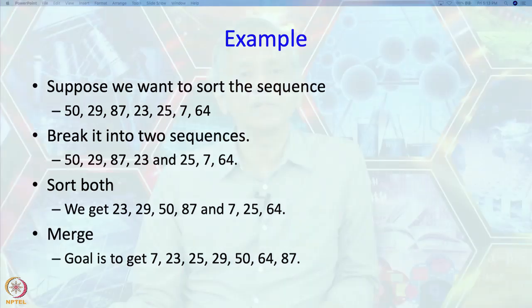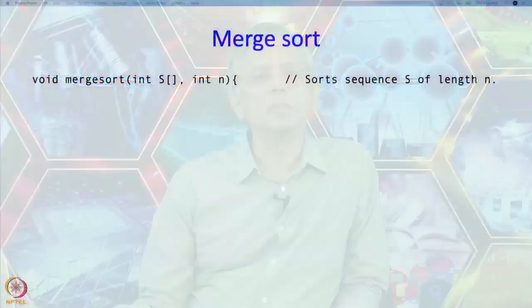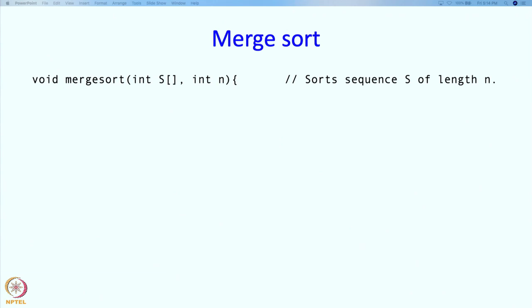That overall structure can already be written into a program, so let us do that. Merge sort is our main function and this is going to sort sequences, a sequence s of length n. That sequence is an argument. There is a natural base case. If n is equal to 1, then there is nothing to do. We just have to return. The s itself is already sorted.